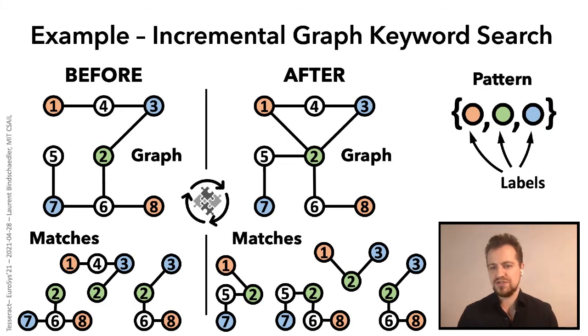So here's our graph keyword search example again, but this time with an evolving graph. Now, you can see what incremental computation means. So on the left, you have the original input graph. On the right, you have the input graph after we applied some updates. So here, updates are just adding or deleting edges. And at the bottom, you have the corresponding matches. So our goal is to compute the differences as efficiently as possible between these two sets of matches. So here, for example, we have three new matches after the update, and we have two matches before the update that are no longer valid.